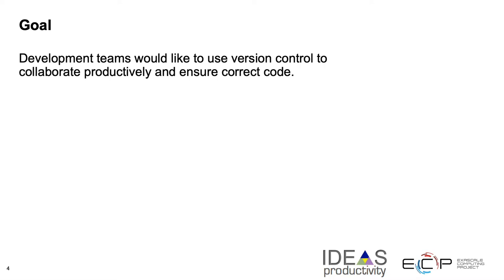Many teams are distributed and team members have a separation of concerns, so they work on various parts of the code. They want to collaborate efficiently so that the code will be sustainable and produce correct results. Git workflows help many scientific software teams attain these goals.